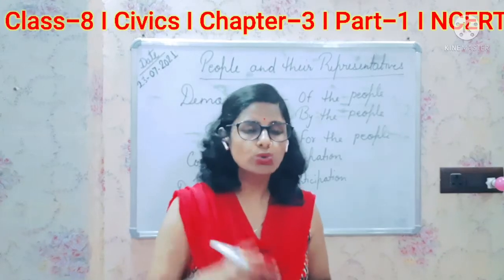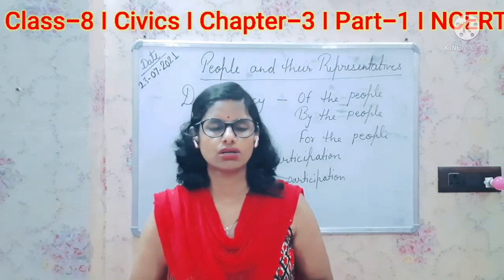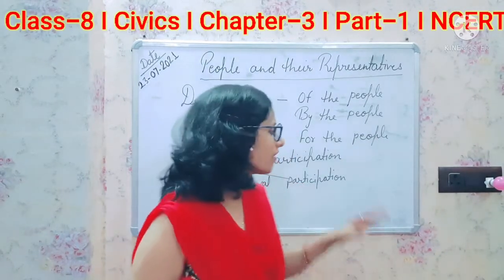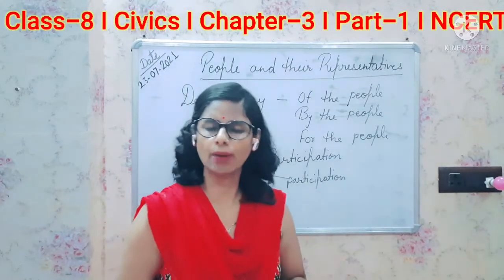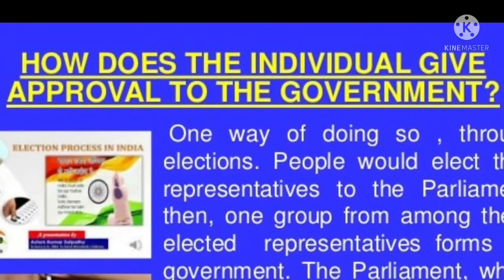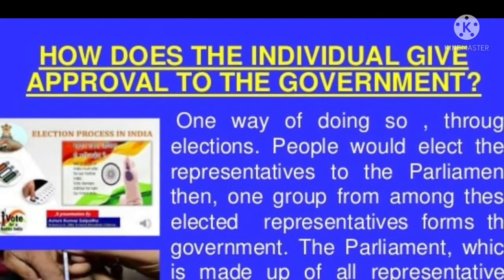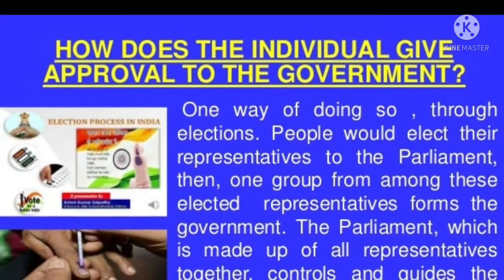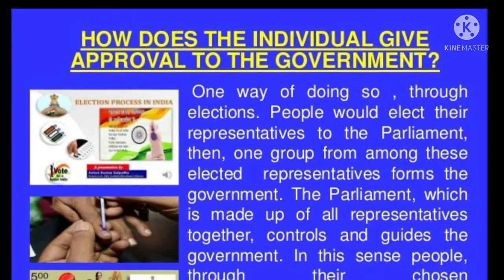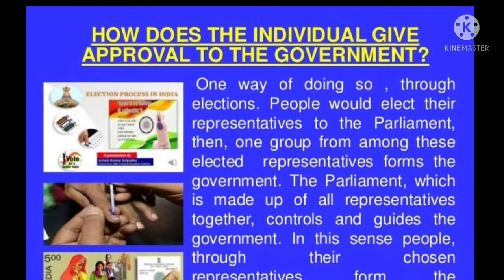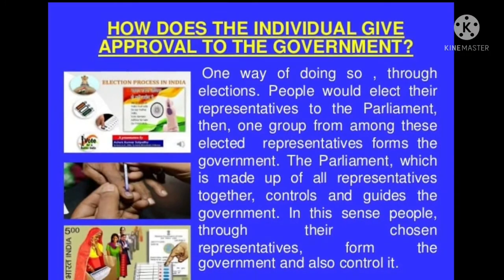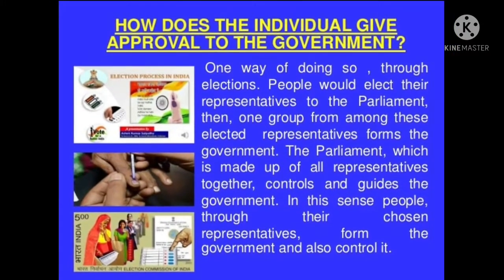Consent is very important in democracy. The approval of the government is given by the people through elections — people elect their representatives to parliament. One group from among these elected representatives forms the government. The parliament, made up of all representatives together, controls and guides the government. In this sense, people, through their chosen representatives, govern and also control the government.